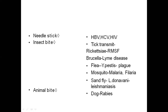Animal bites cause zoonotic disease. Rabies is transmitted by the bite of an infected dog or fox. The virus travels via neural supply to the CNS and brain tissue — this is the pathogenesis of rabies, which you would have studied in microbiology.